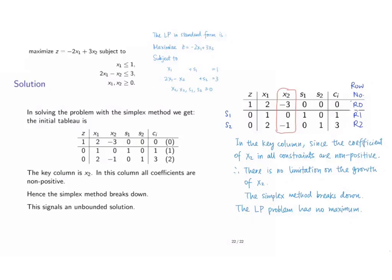If we solve the problem using the simplex method, we will come up to the phenomenon that there is no positive ratios for the right-hand side constant and the coefficients at the constraint rows of the key column for us to compare. It means that there is no limitation on the growth of the variables represented by the key column, that is x2 in our case.